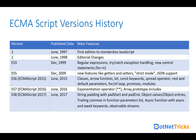Then we have ECMAScript 2015, or ES6, released in June 2015. With ES6, we have classes, arrow functions, let and const keywords for defining variables, spread operator, rest and default parameters within functions, for-of loop, promises, and modules. ES6 introduced so many features which we can use for writing JavaScript code in a better way.